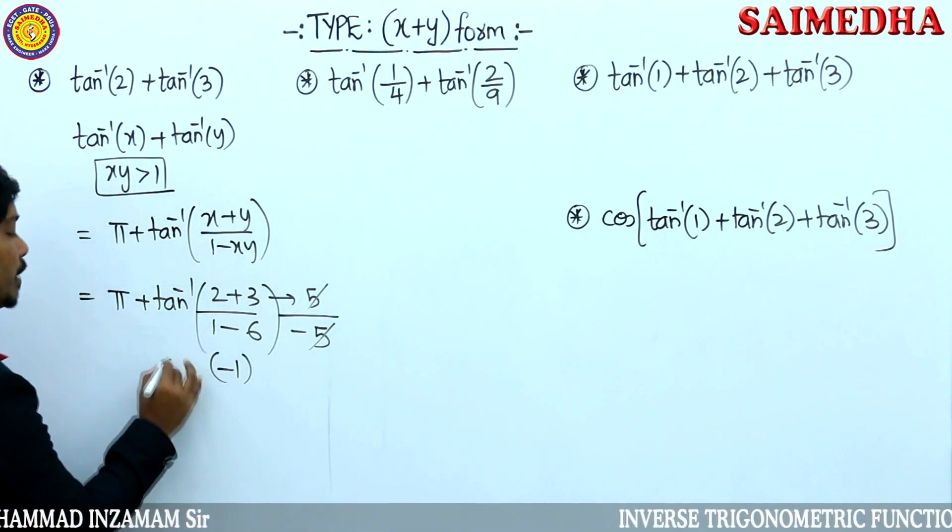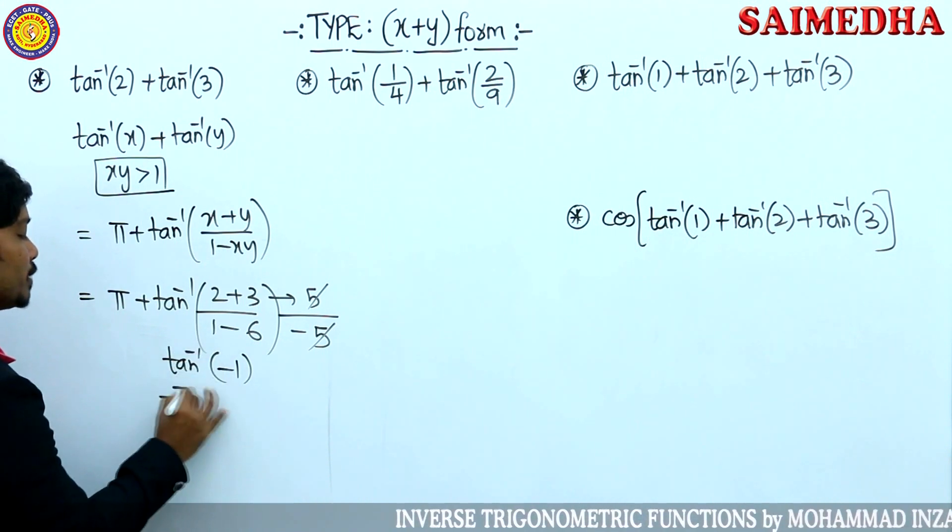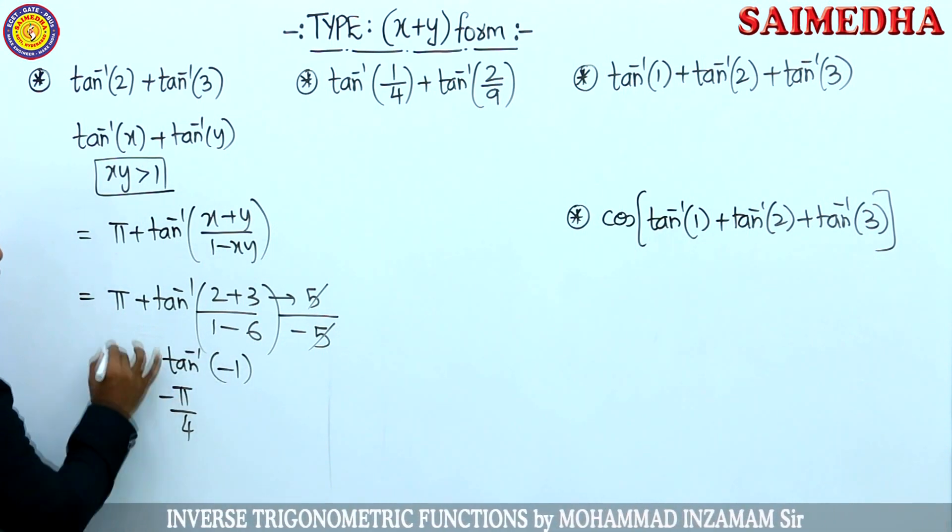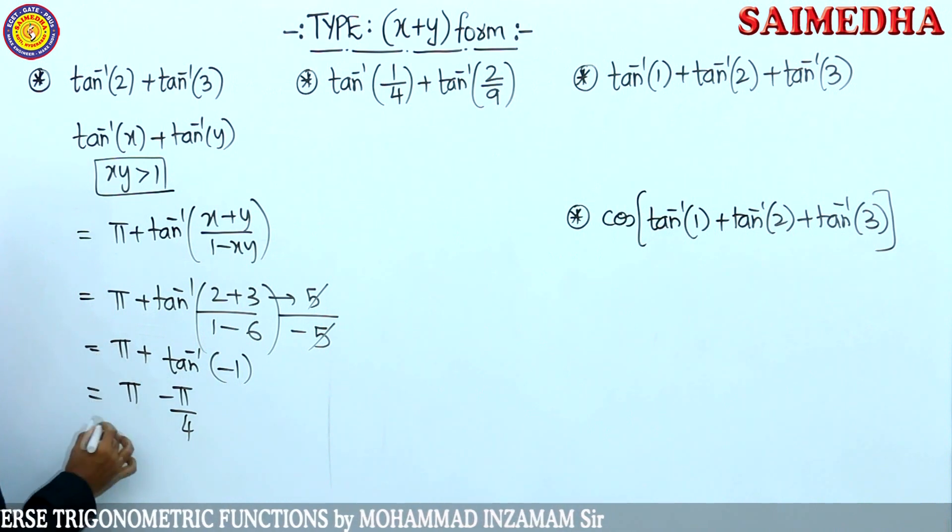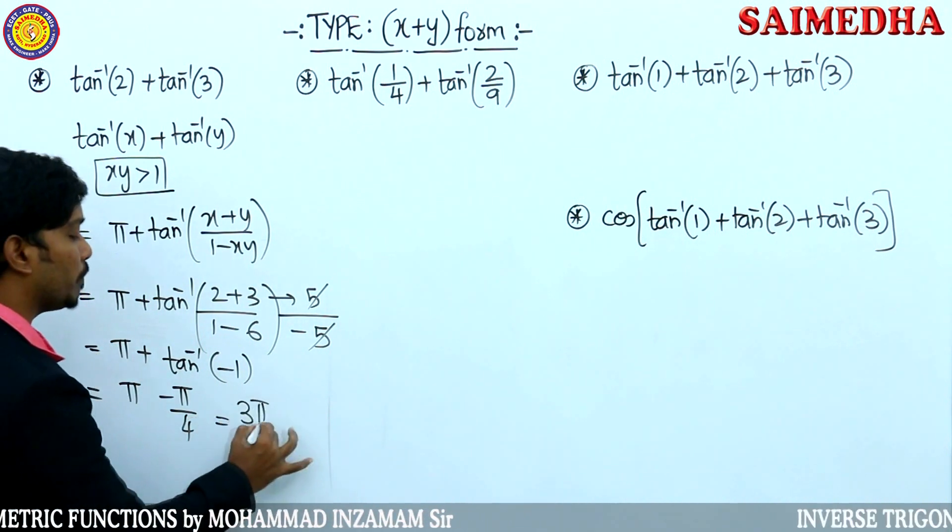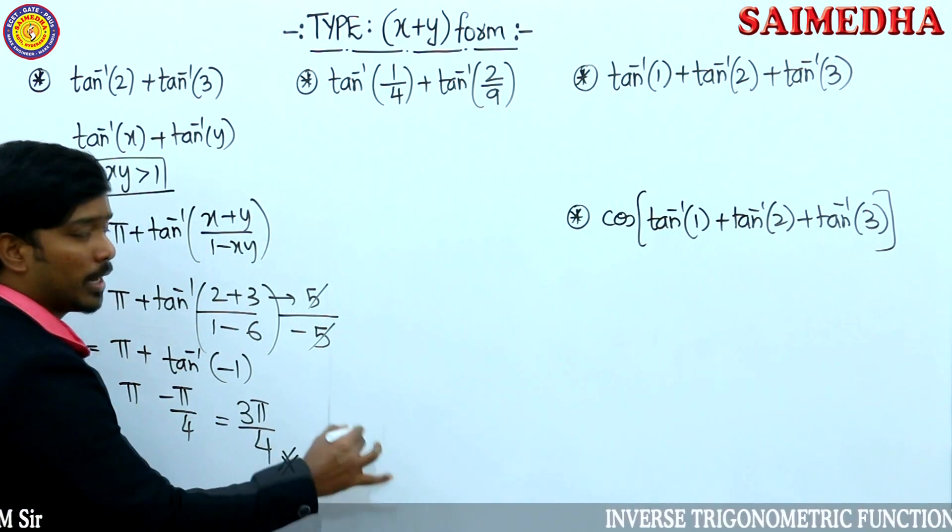Tan inverse of minus 1. Question number 1, tan inverse of minus 1 is minus pi by 4. Pi minus pi by 4, 3 pi by 4 is going to be your answer guys.